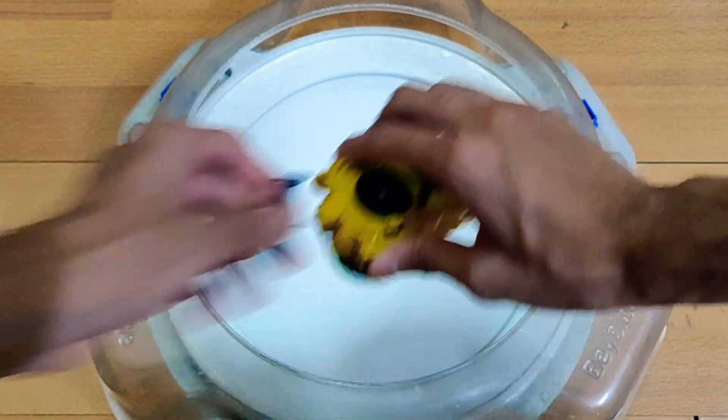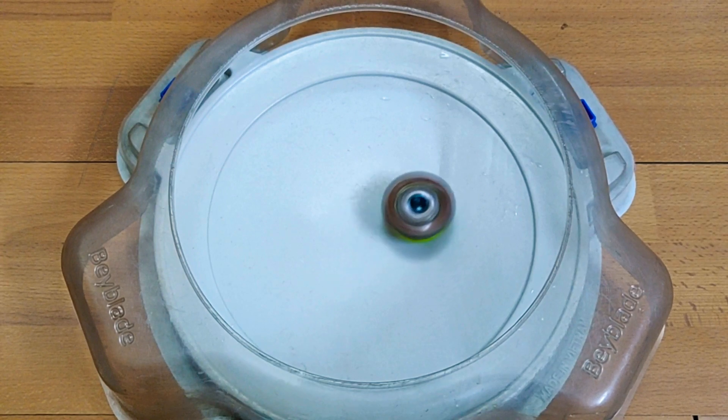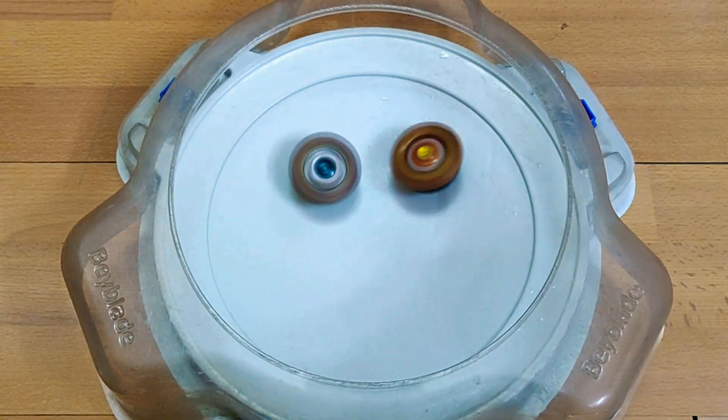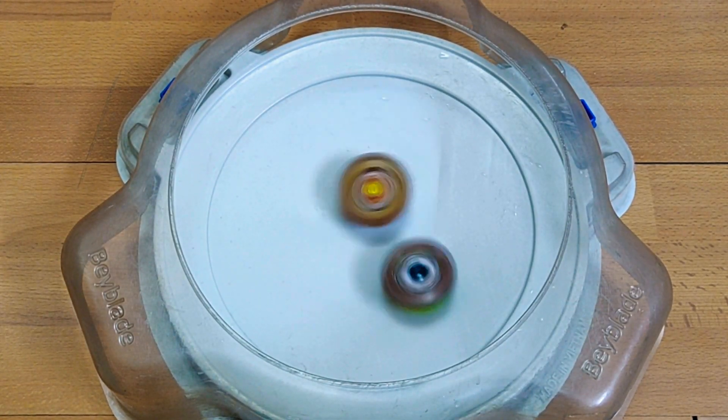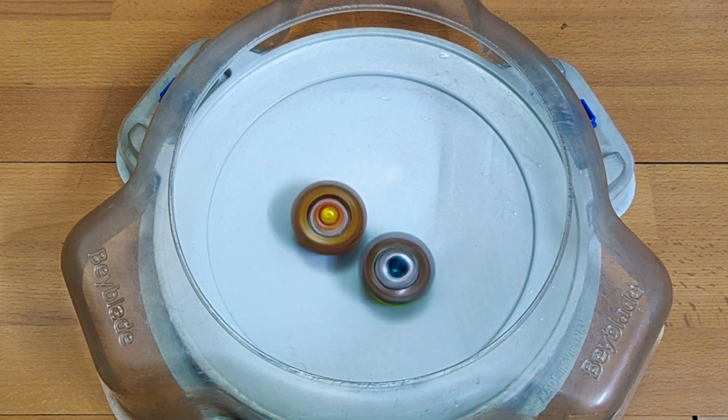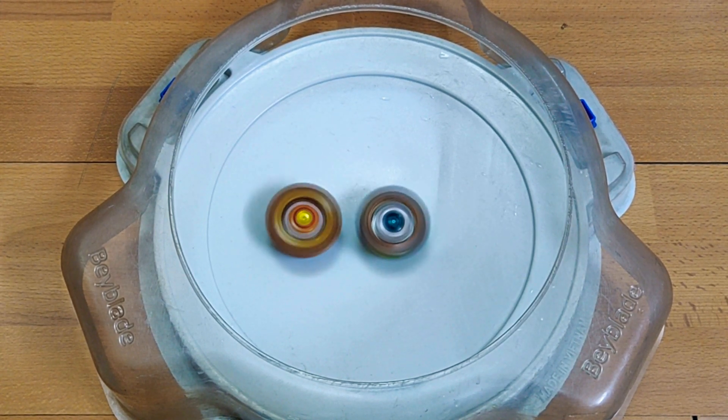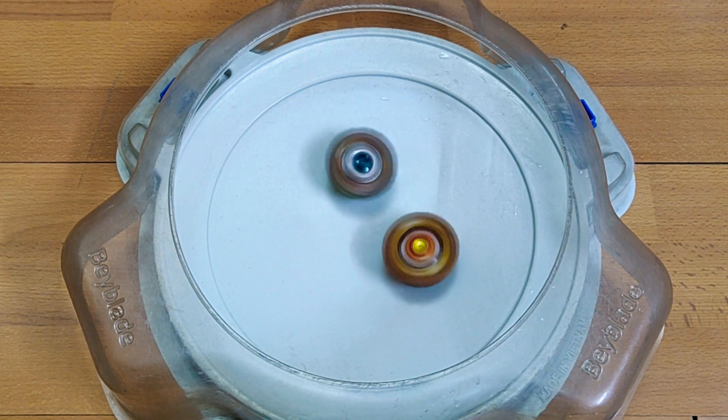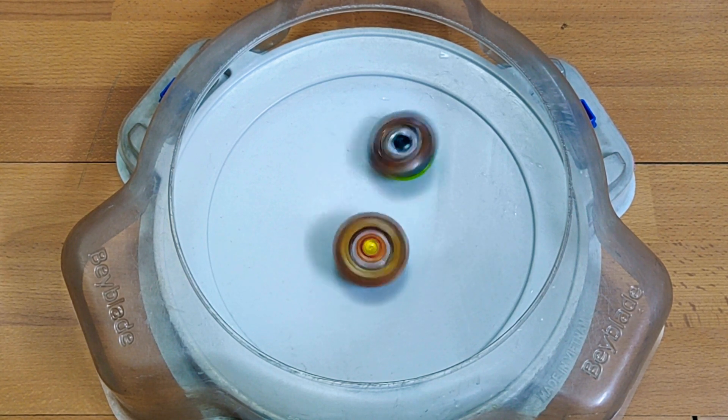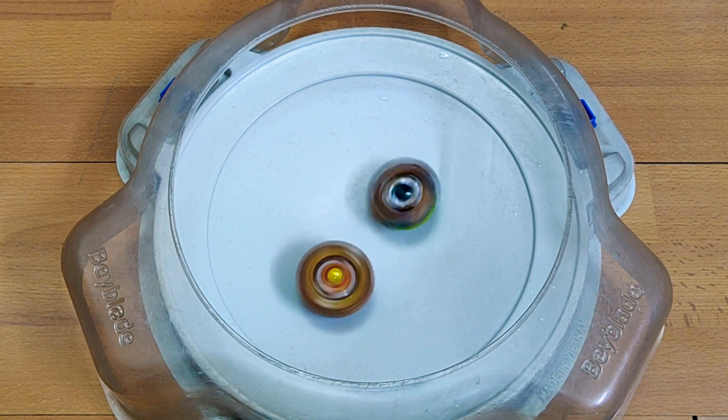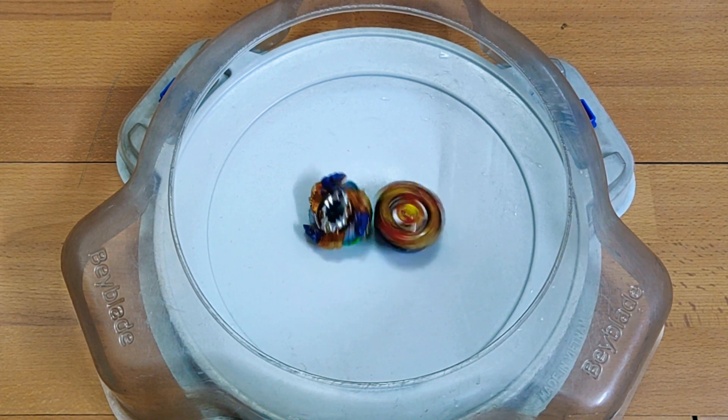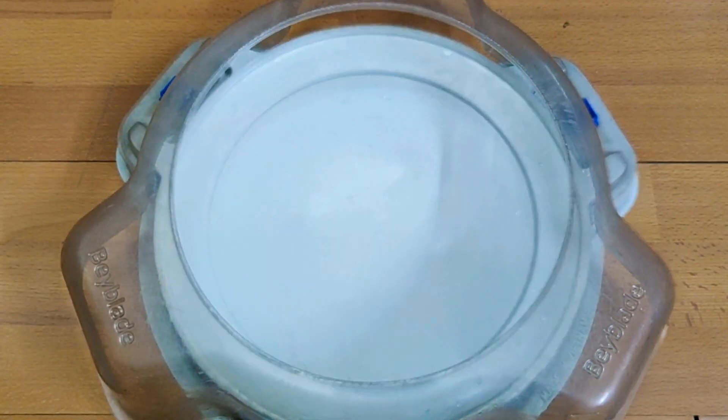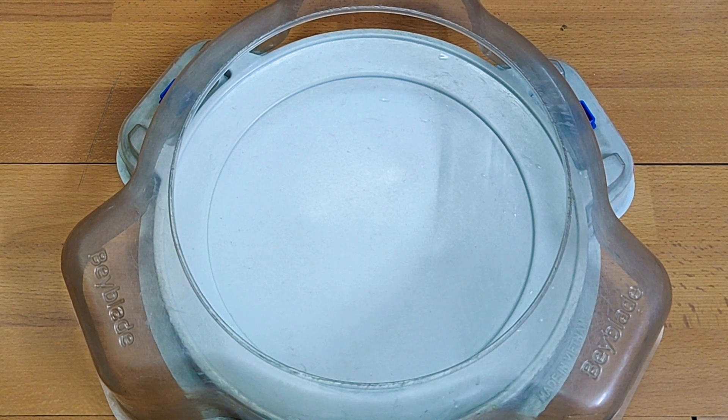So moving on to the next round. 3, 2, 1, go shoot. Not able to attack that much actually, but still trying to. Whoa, that's Free for the win. Oh sorry, Shu for the win. So that's 2 to 3.